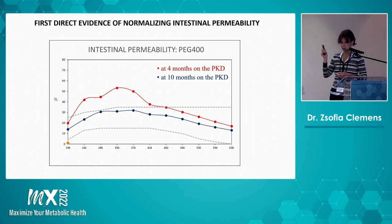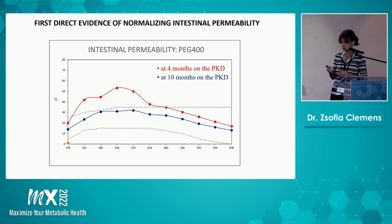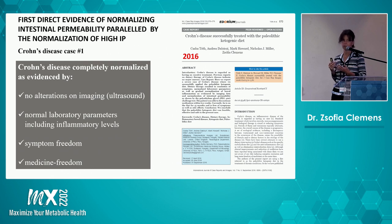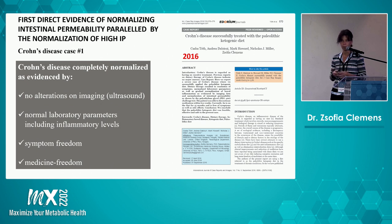Everything is plotted on a graph — anything above the upper dotted line is regarded as high, and the normal range is between the two dotted lines. Along with this reversal of elevated intestinal permeability, the ultrasound of the intestine normalized. The intestinal thickening — basically meaning inflammation and edema — normalized. We followed the patient with laboratory blood works and saw an improvement and complete normalization of lab parameters including inflammation levels. The patient also achieved symptom freedom and medicine freedom.